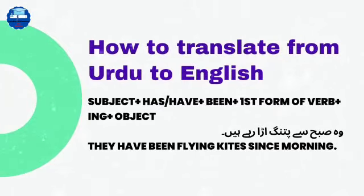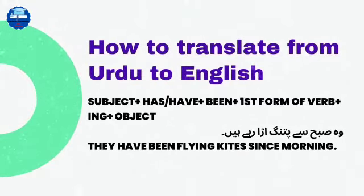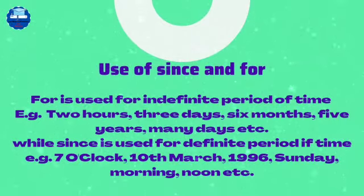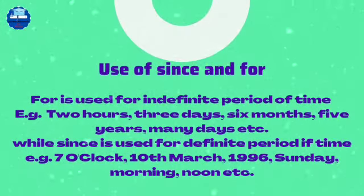The formula is: subject plus has or have plus been plus first form of verb plus -ing plus object. For example: 'They have been flying kites since morning.' Now, how do we use 'since' and 'for' for time periods?